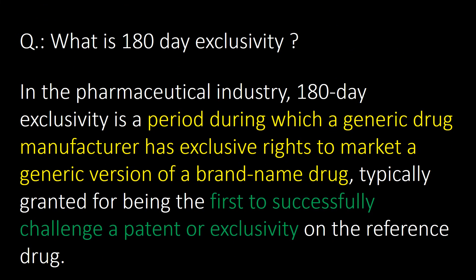What is 180-day exclusivity in the pharmaceutical industry? 180-day exclusivity is a period during which a generic drug manufacturer has exclusive rights to market a generic version of a brand-name drug. It is typically granted for being the first to successfully challenge a patent or exclusivity on the reference drug.